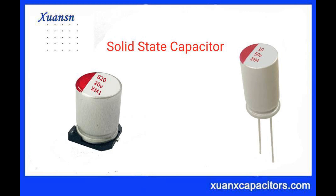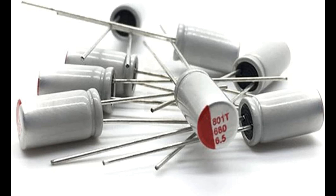Before the solid electrolyte material is deposited onto the electrodes, the anode undergoes a formation process. This involves applying a voltage to the anode in an electrolytic solution, which forms a thin, uniform oxide layer on its surface. This oxide layer serves as the dielectric material in the capacitor. The cathode may also undergo a similar formation process depending on the specific type of solid electrolytic capacitor. The electrodes are typically deposited onto a substrate made of materials like ceramic or glass, providing mechanical stability.